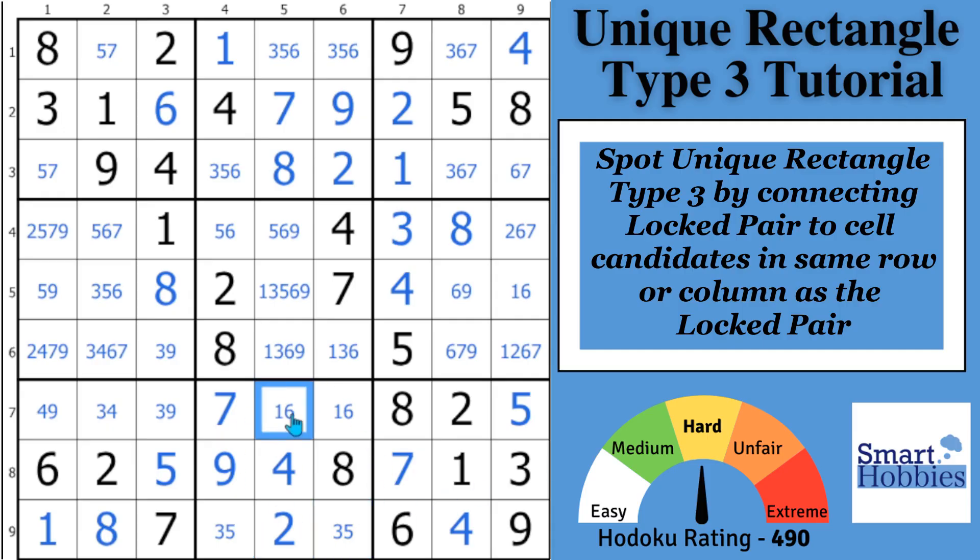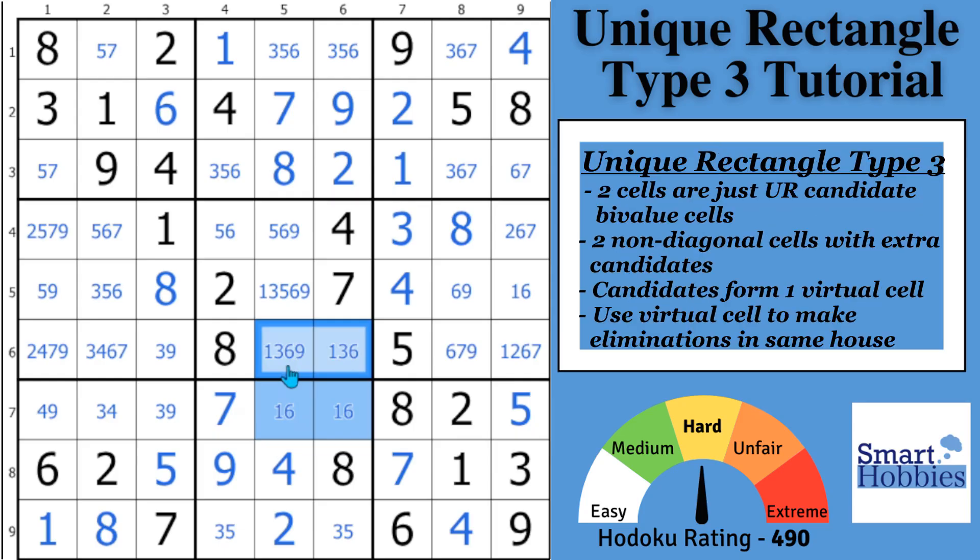Now, if you stay in this block and you look at this 1-6, you notice it is a by-value cell, a locked pair. Scan up the column, and you'll see right here you have two cells in the same columns. They're in the same block in the same row. They both have a 1-6 in there, but they have additional candidates. In this case, a 3 and a 9 in this cell and a 3 here. When you see this situation, you have found a unique rectangle type 3.